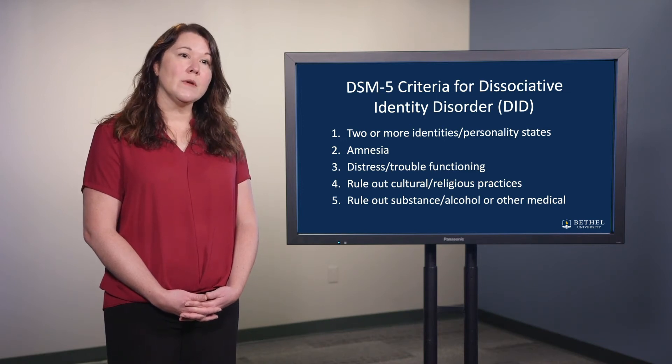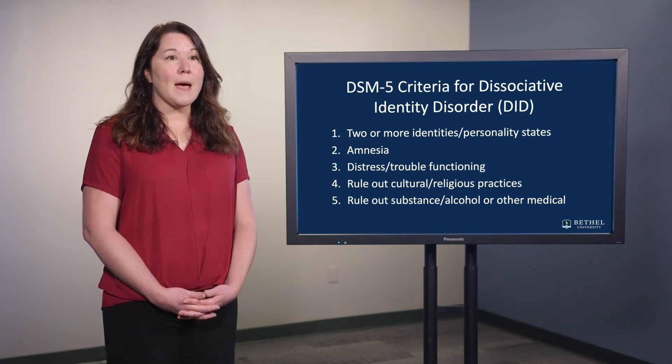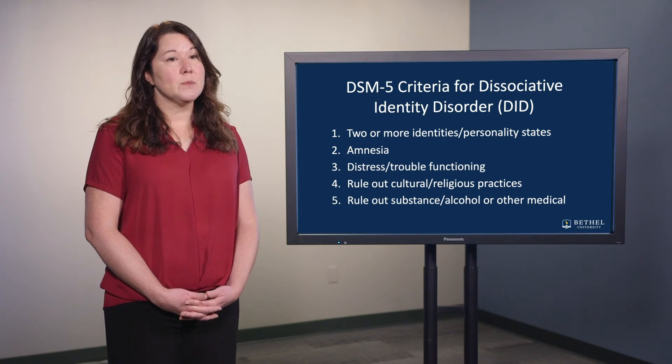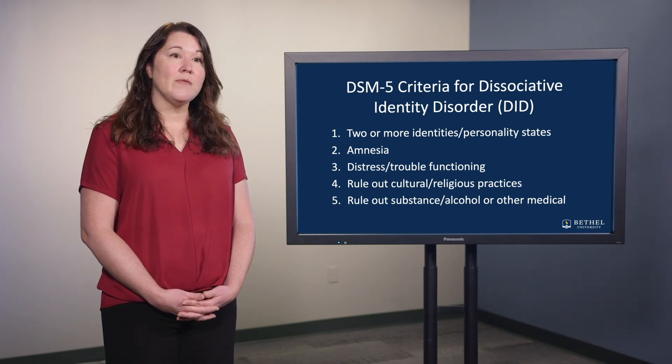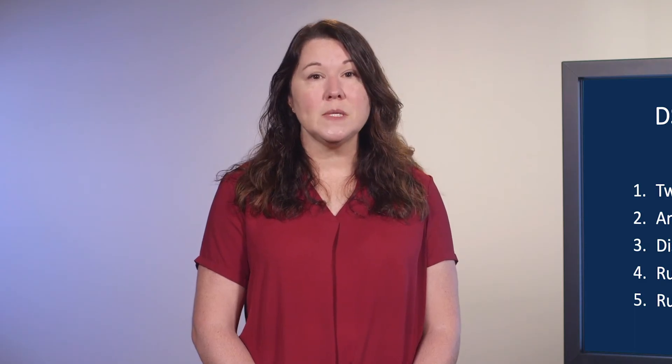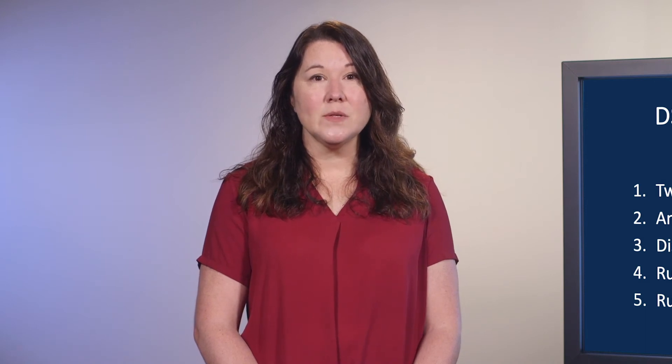We would then make sure there are at least two distinct identities or personality states, amnesia that happens as a result of shifting between these personality states or identities, as well as actual distress or trouble functioning. It is important to realize the individual struggling with Dissociative Identity Disorder might not be the one identifying the trouble with functioning — it might be a family member or other individual. Can you see how complex it is to really consider if someone has such a diagnosis? This is not a diagnosis given out lightly.